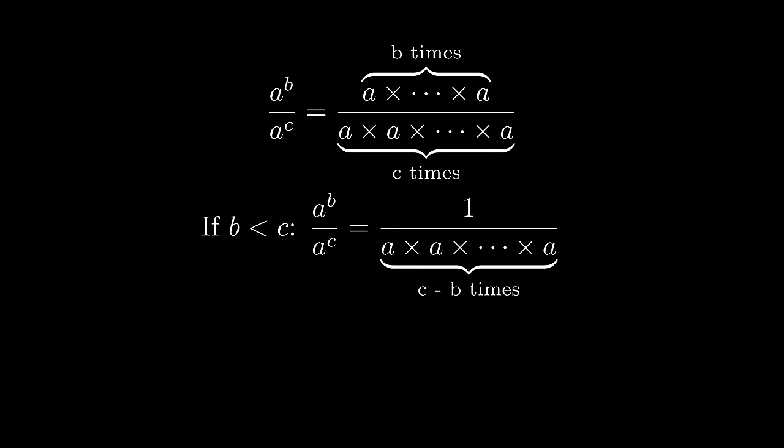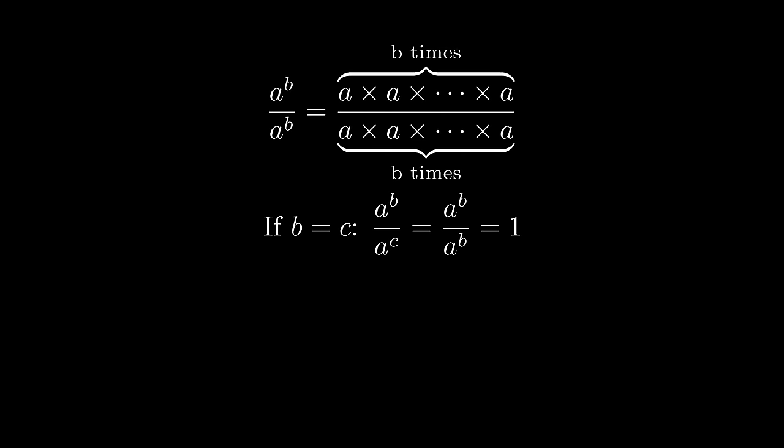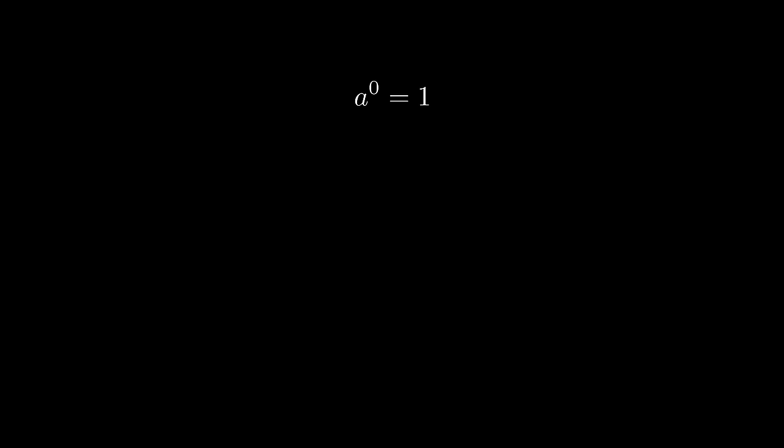This notation will remain true even if b is less than c. And if b equals c, we are dividing one number by itself, so the result is 1. Following this chain of logic, when a is a positive integer, a to the power of 0 is always 1.